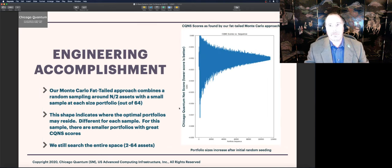Another engineering accomplishment was the Monte Carlo fat tail approach. This combines random sampling with sampling on all the different asset sizes. What we're able to find is those couple of asset portfolios, a couple of small portfolios that really have a terrific Chicago quantum net score. Because as you get larger and larger, you're diversifying away your risk, but also your potential outperformance. We still search the entire space, but it's nice to know in advance where the best values are going to be, or most likely to be.